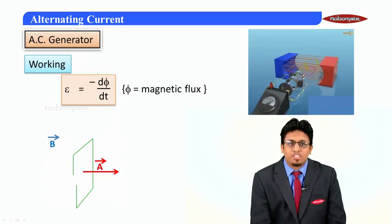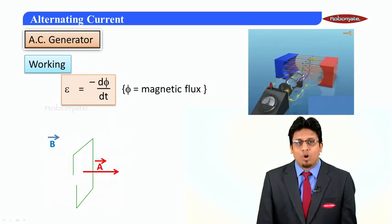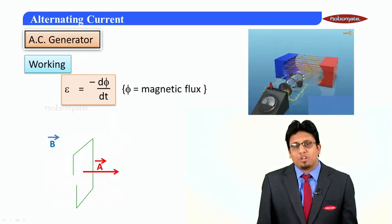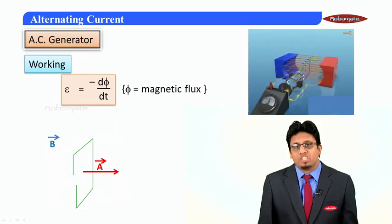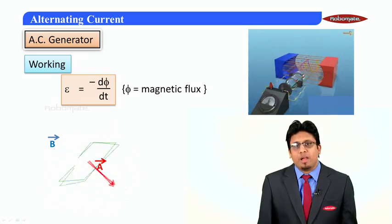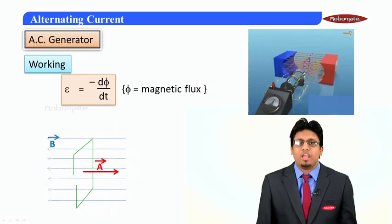But in this particular case, the AC generator works on the principle that the magnetic flux can also be changed by changing the angle between the magnetic field and the area vector.